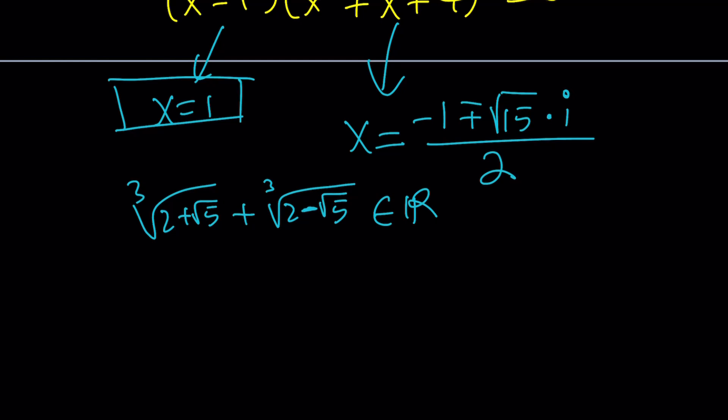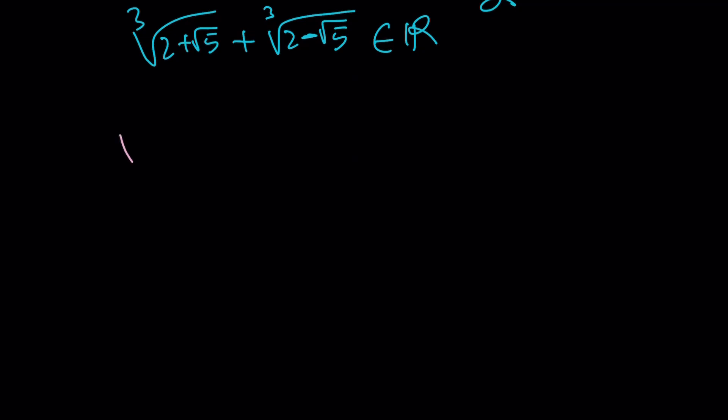Make sense? In other words, the cube root of 2 plus root 5 plus the cube root of 2 minus root 5 is the same thing as 1. That's kind of hard to believe, right? I mean, you can show this to people, your friends, your parents, your colleagues, whoever you want, professors. Well, be careful with the professors. You don't want to offend them. But anyways, and tell them that this is an integer. It is actually. Anyways, let's go ahead and talk about the second method and we'll finish with that.